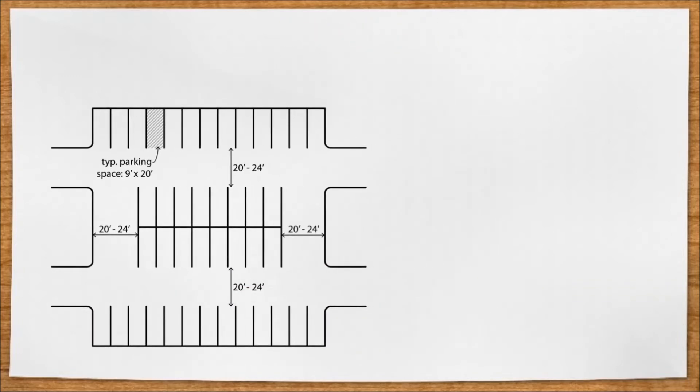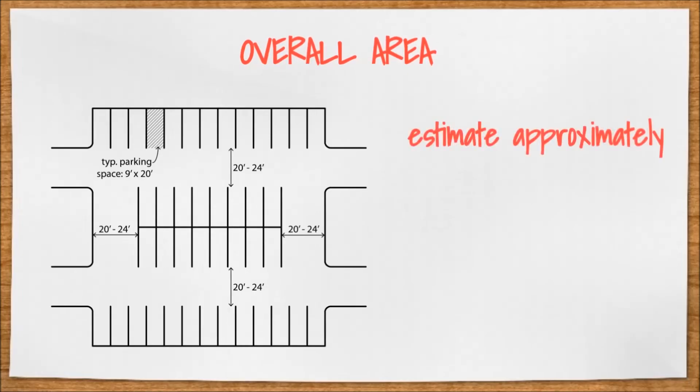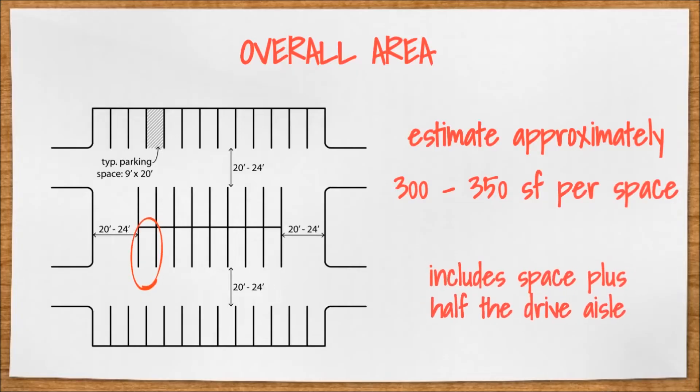When estimating the overall area of a parking lot, you can typically allocate between 300 and 350 square feet per space. This area includes the parking space itself, plus half of the drive aisle.